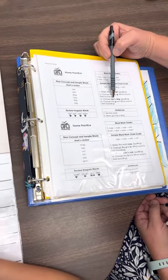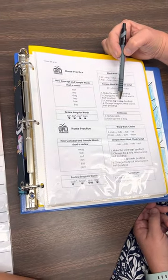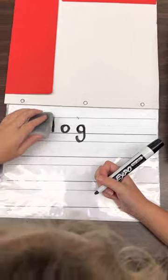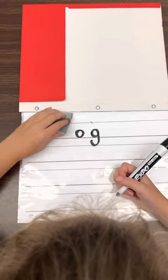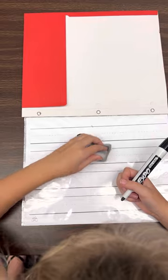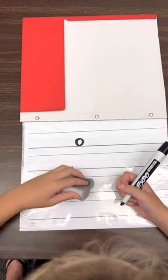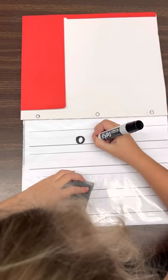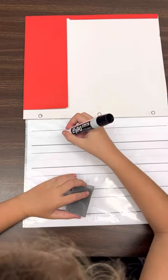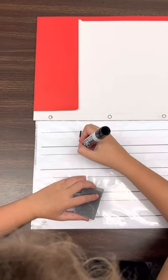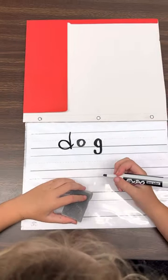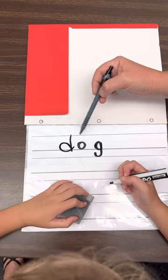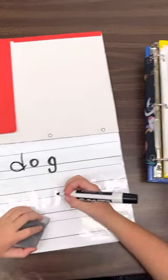Okay. Change log to dog. You knew it was the beginning of saying it. Dog. Smart thinking. Good. Say the sounds. Dog. What word? Dog. Very good.